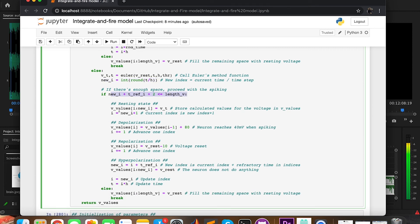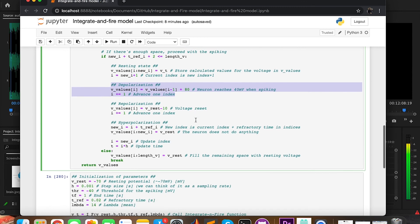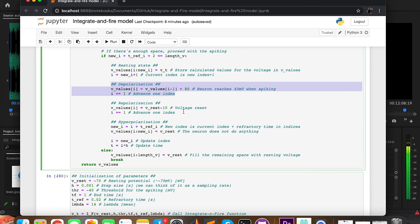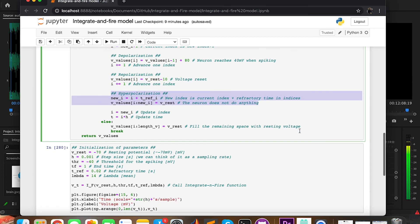The first stage is the resting state, of which we have calculated the values with Euler's method. The second one is the depolarization, where the neuron spikes, so we add 18 millivolts to the neuron's voltage. The third one is the repolarization, where the neuron goes back to the resting potential, a little bit less actually, and finally the hyperpolarization, where the voltage is back to minus 70 millivolts, and the last step is to update the index i and time t.